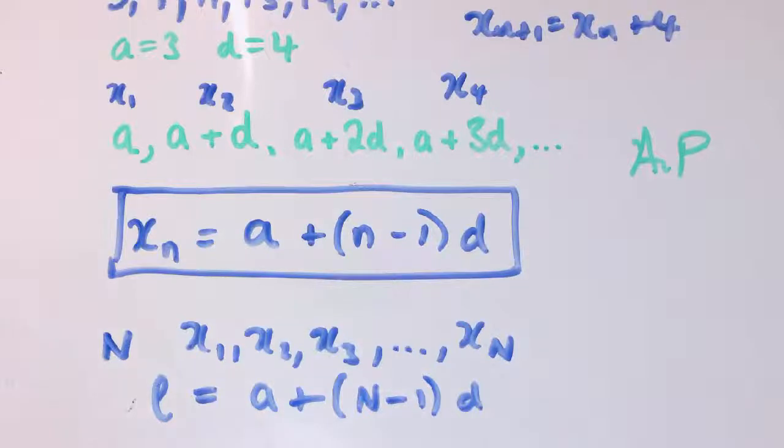The last term l would then be xₙ, which would be a plus N minus 1 times d for that value. A slightly confusing thing is sometimes people use this little n for the number of terms rather than using a different letter. But it's just saying the same thing. If I've got a particular term, let's say n here is 100 and there's only 100 terms in the sequence, then that last term would just be the case for n equals 100.